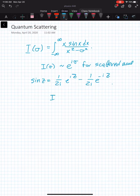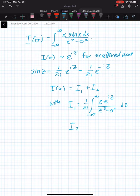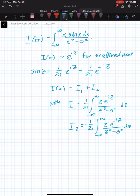And then i sigma is equal to i1 plus i2. With our definition that i1 is equal to 1 over 2i from minus infinity to infinity of z e to the iz over z squared minus sigma squared dz. And i2 is equal to minus 1 over 2i from minus infinity to infinity of z e to the minus iz over z squared minus sigma squared dz. What I mean by that is that, depending on which way this wave is going,